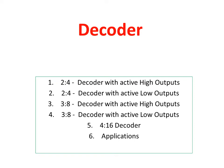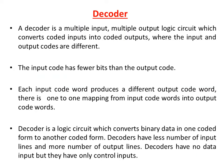In this video I am going to discuss decoder. Decoder is a combinational circuit. It is a multiple output, multiple input logic circuit which converts coded inputs into coded outputs where the input and output codes are different. The input code has fewer bits than the output code. Each input code word produces a different output code word, and there is one-to-one mapping from input code words into output code words. Therefore, the decoder is a logic circuit which converts binary data in one coded form to another coded form.